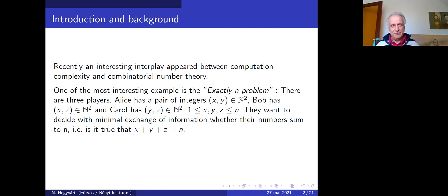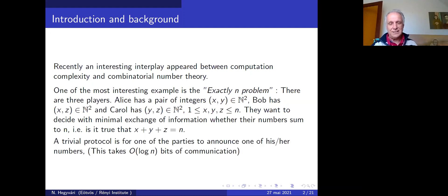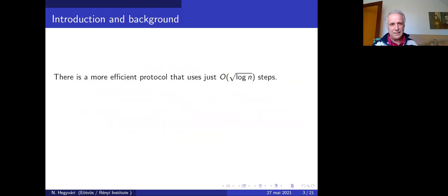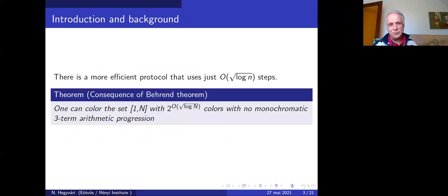An example is the exactly n problem where three players Alice, Bob, and Carol each have pairs of integers, and must determine if the numbers sum to n with minimal exchange. There is a more efficient protocol that uses just O(√log n) steps.